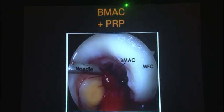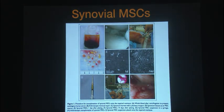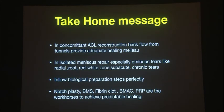Finally, you can use bone marrow aspirate concentrate or PRP to reduce the inflammatory response, promote cellular response, and control inflammation. Newer techniques also report the use of synovial mesenchymal stem cells. Take-home message: in the presence of ACL you do not need to worry as much. All these tricks are especially necessary for isolated meniscus repairs. However, biological preparation must be perfect for all tear types. Be ready with notchplasty, bone marrow stimulation, fibrin clot, BMAC, and PRP as available options.